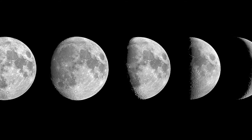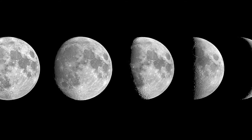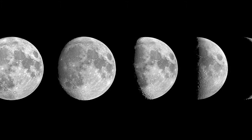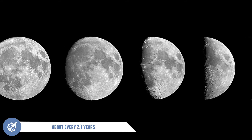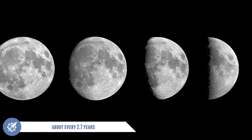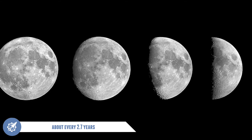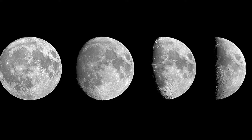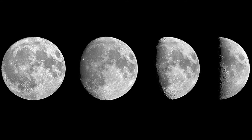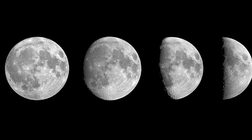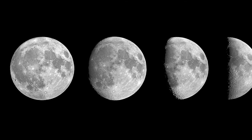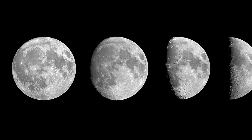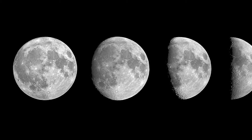Occasionally there are 2 full moons in the same month, and this happens about once every 2.7 years. This is referred to as the blue moon. So let's look at the names and the descriptions of the phases of the moon.